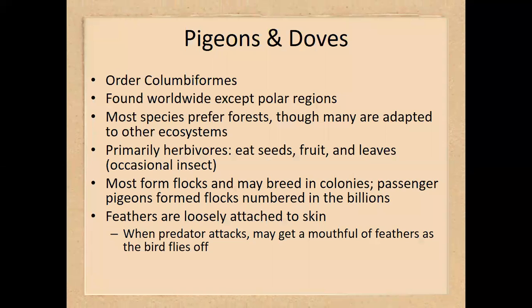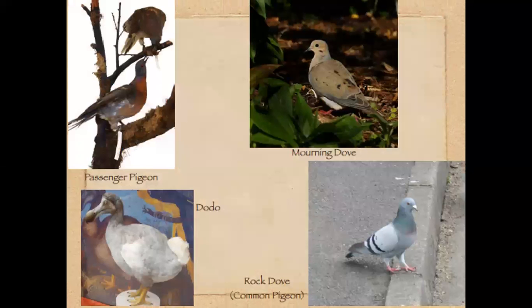Pigeons and doves are our last group. They are found worldwide with the exception of polar regions, and are primarily herbivores. They create crop milk for their offspring, tend to form large flocks, and can breed in colonies. Their feathers are relatively loosely attached to their skin compared to other groups. The passenger pigeon and the dodo, shown on these slides, are extinct.